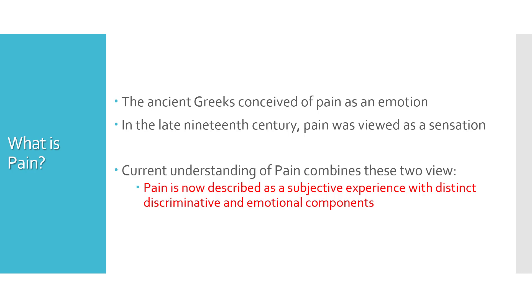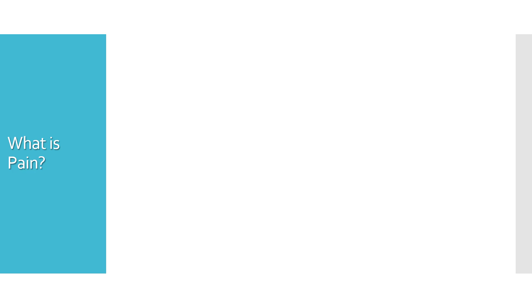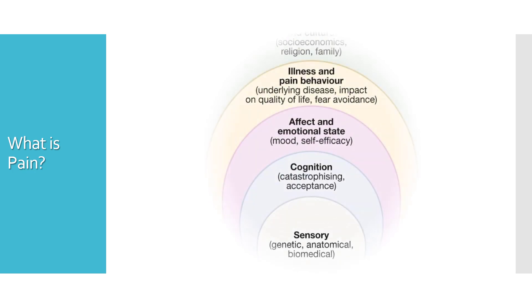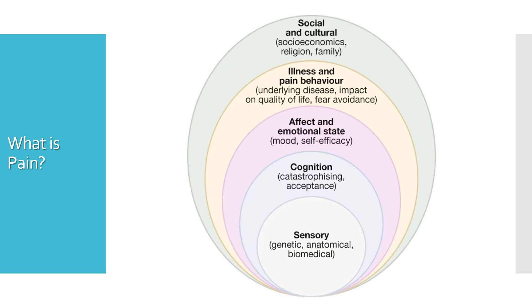Pain can be viewed as an onion — it has layers. There is the sensory component which includes the genetics, the anatomical components of the pain pathway, the biomedical and biochemical components like the neurotransmitters involved. But then moving upwards, it's the individual's cognitive reaction to the pain that also plays a role, then their emotional state, any underlying disease, and their social and cultural background. So all these factors play a role in how someone perceives and reacts to pain.